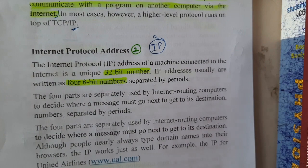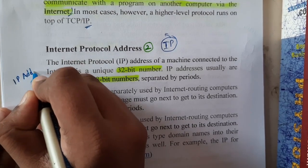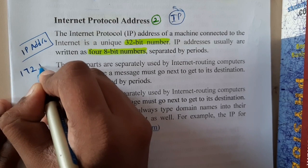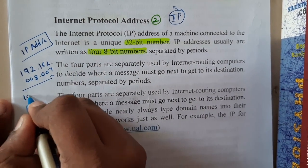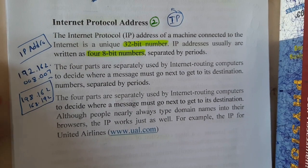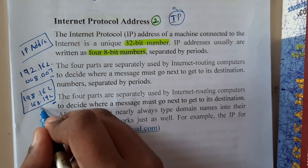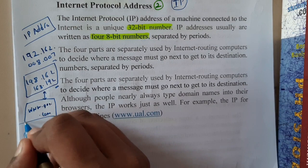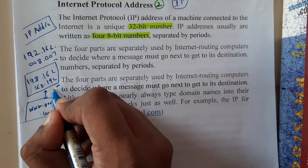Internet protocol is nothing but IP. We heard the word IP address. For example, they will be saying a website's IP address is something like 192.162.008.007 or 198.162.168.192 - I'm just giving random values. So if someone gives you both an IP address and says the website name is google.com, which one would you remember? You would blindly remember google.com because it's in text format, whereas IP is numerical.